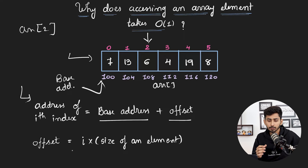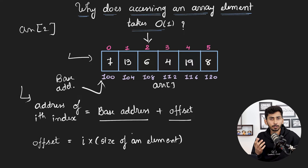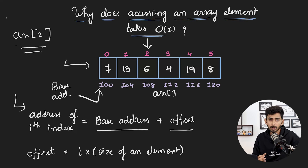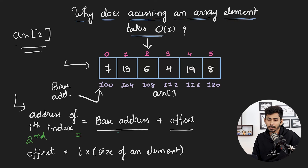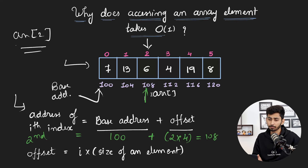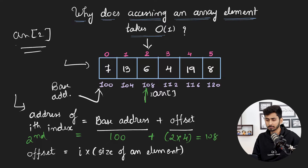The offset is the product of the index i multiplied by the size of an element. Since this is an integer array, the size of an element is 4 bytes. To find the address of index 2: base address is 100, offset is 4 × 2 = 8, so the address is 100 + 8 = 108. You can observe that the address of the first byte of cell number 2 is indeed 108. In this manner the compiler can calculate the address of any i-th index in constant time — hence accessing an array element is O(1).